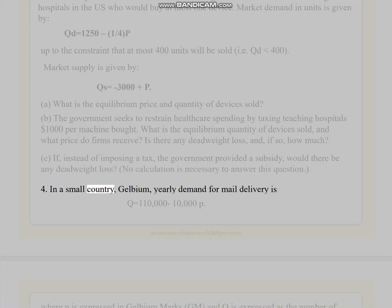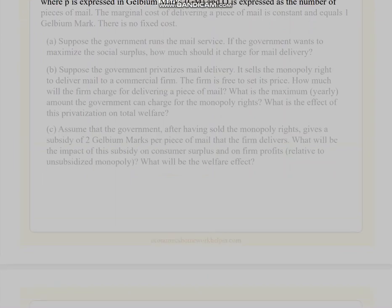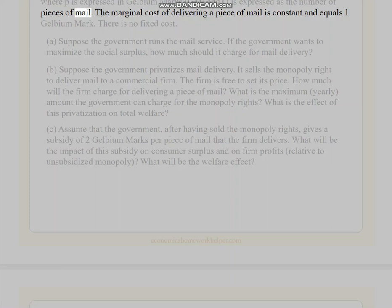4. In a small country, Gelbium, yearly demand for mail delivery is Q = 1,100,000 - 10,000 P, where P is expressed in Gelbium marks (GM) and Q is expressed as the number of pieces of mail. The marginal cost of delivering a piece of mail is constant and equals 1 Gelbium mark. There is no fixed cost.